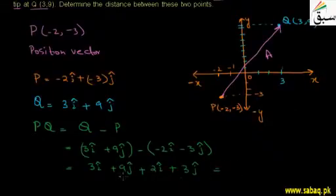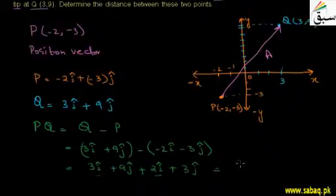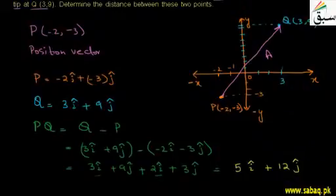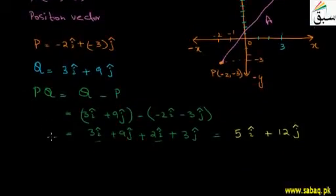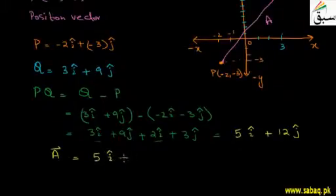Combining the î terms and the ĵ terms: 3 plus 2 gives 5î, and 9 plus 3 gives 12ĵ. So vector A equals 5î plus 12ĵ. This is the vector from point P to point Q, which we denote as vector A.